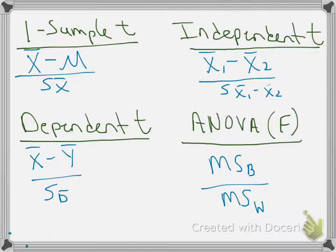All right, so these are the formulas for the most commonly used t-tests to compare different groups and the ANOVA. The first thing that all four of these formulas have in common is that they're all really trying to do the same thing — they're comparing group means to each other to find out whether they are meaningfully different from each other.